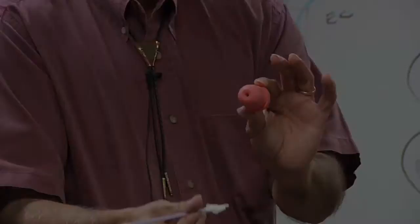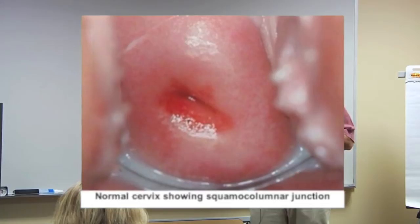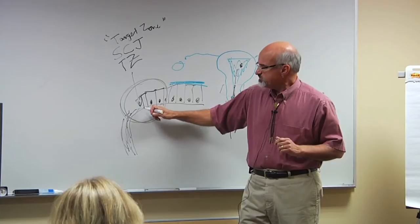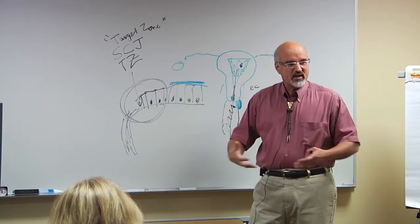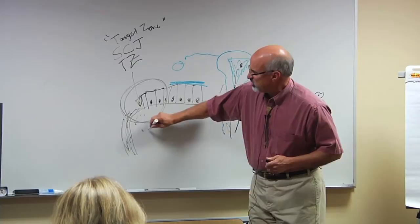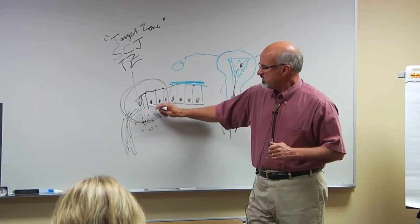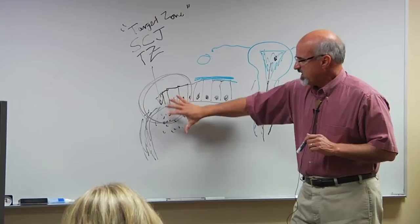The next question is why? Why is the squamous columnar junction the point of interest? Why is it the target zone? It turns out that this is a very metabolically active area that, because we've said it can retreat and expand, it constantly moves in a woman's lifetime. It's also exposed to the flora of the vagina, and there's inflammation that occurs as a normal process here. These inflammatory changes will cause nuclei to become active. Their little RNA factories go to work, they're doing what they're supposed to. The nuclei may enlarge, but this is all part of the activity that is going on here all the time.